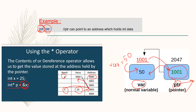Pointers allow returning structure variables from functions. They also support dynamic allocation and deallocation of memory segments. By using pointers, variables can be swapped without physically moving them. Pointers allow establishing links between data elements or objects. They also allow passing variables, arrays, functions, strings, structures, and objects as function arguments.